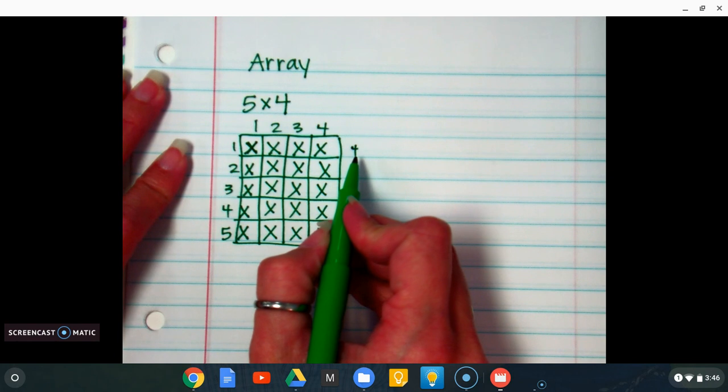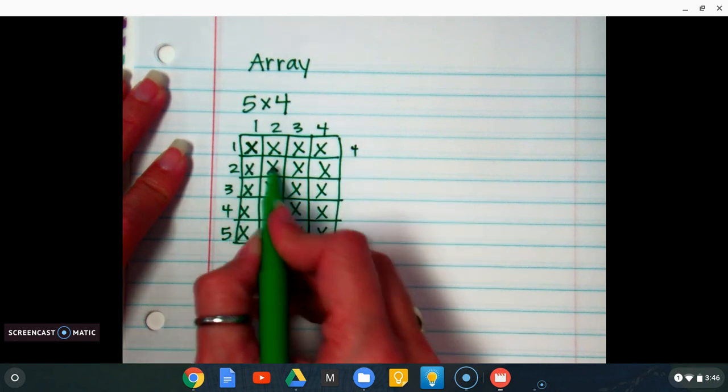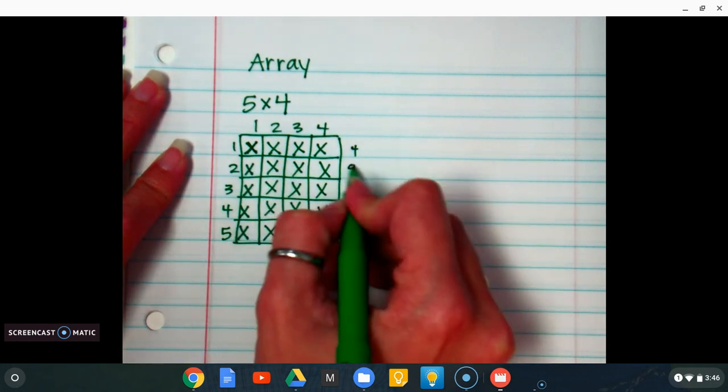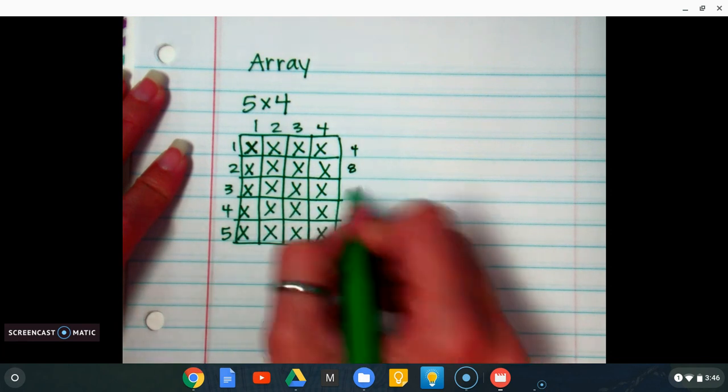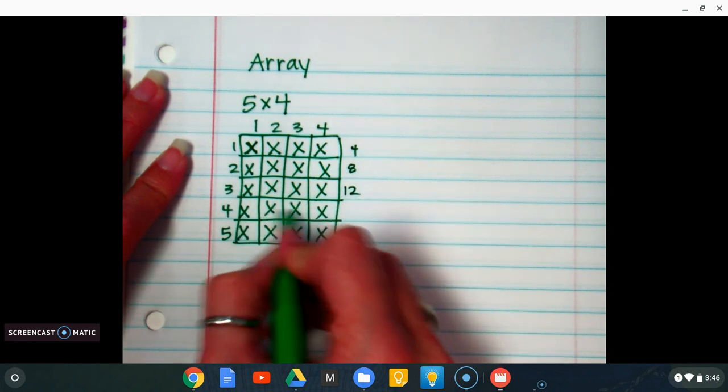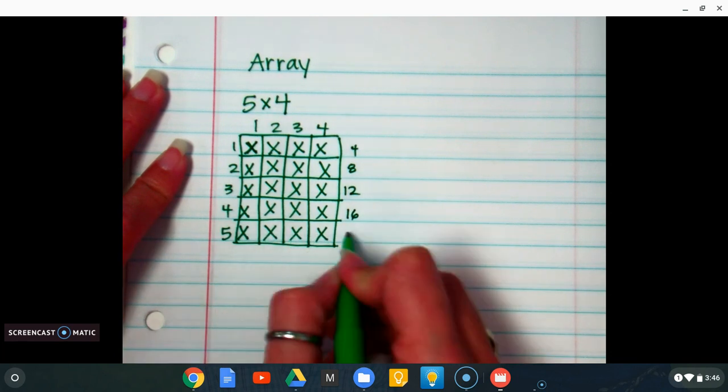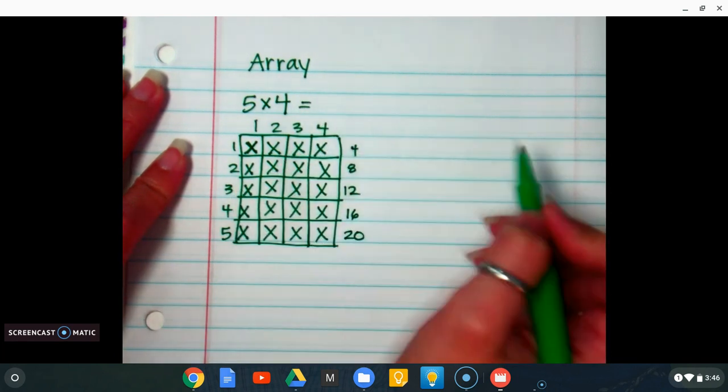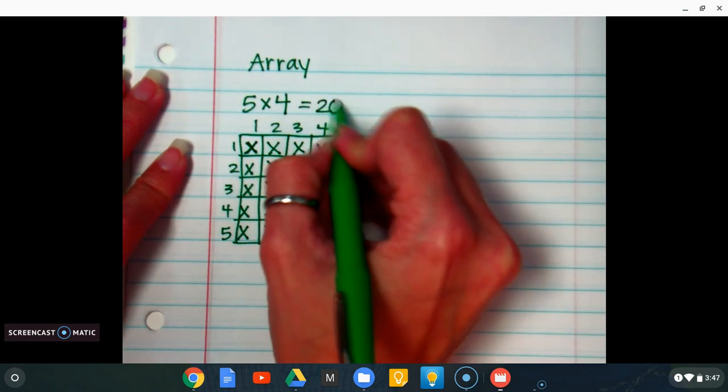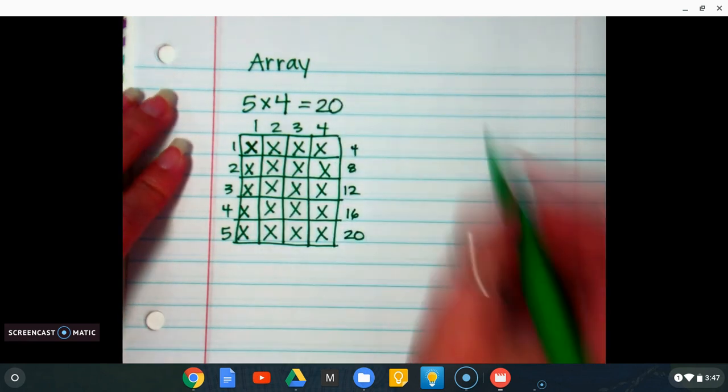So that's 4, 5, 6, 7, 8, 9, 10, 11, 12, 13, 14, 15, 16, 17, 18, 19, 20. So our answer to 5×4 is 20.